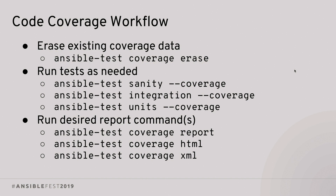Running with code coverage is pretty simple in ansible-test. You use the same commands as before — sanity, integration, or units. The basic workflow is: first run ansible-test coverage erase to clear out any existing coverage data from previous runs. Then run your tests as needed — whether a single test run or multiple runs you want to combine for analysis — by adding the --coverage option to those commands. When you're done, ask for your reports: ansible-test coverage report for basic console output, ansible-test coverage html for the HTML report, and ansible-test coverage xml for the machine-readable Cobertura XML version.